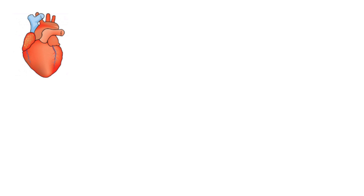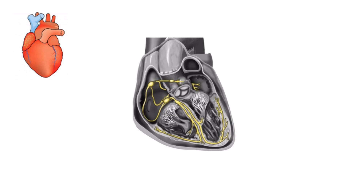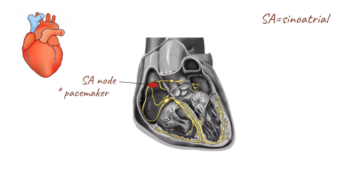The heart is a muscular pump that pumps blood around the body. This pumping action of the heart is controlled by the cardiac conduction system. The sinoatrial node, or SA node, is the pacemaker of the heart and is the point of origin of the electrical impulses that are propagated through the heart.